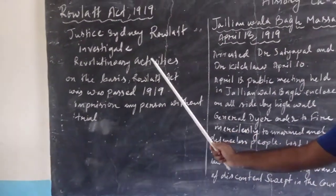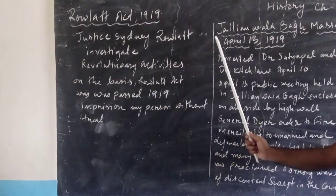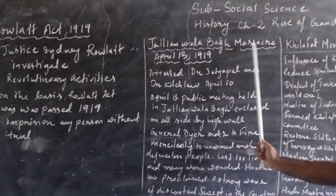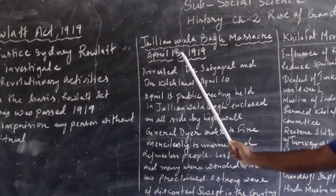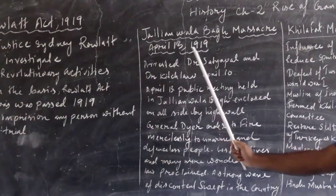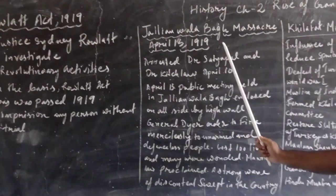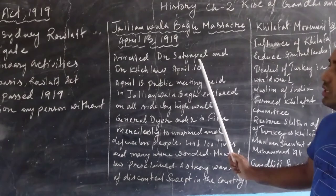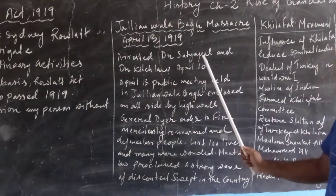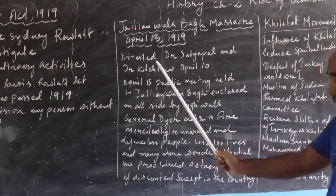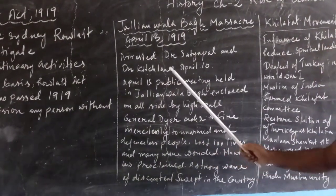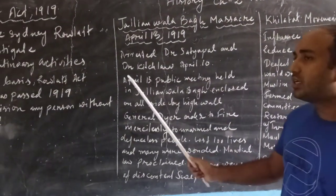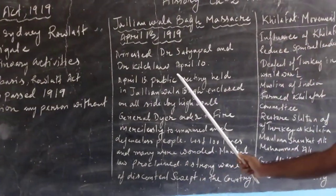In connection to the Rowlatt Act, next we have the Jallianwala Bagh massacre of April 13, 1919. This is one of the most tragic incidents which happened in India. After the Rowlatt Act was passed, many people of Punjab became furious against the British.